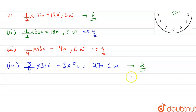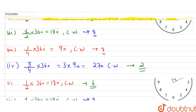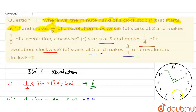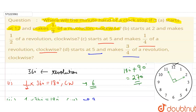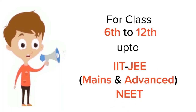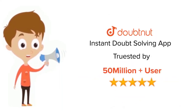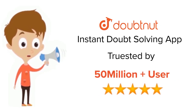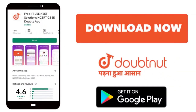In the last part, we first moved it 180 degrees and then another 90 degrees, totalling 270 degrees. That completes our answer. Thank you. For class 6–12, IIT JEE and NEET level, trusted by more than 5 crore students — download the DoubtNet app today.